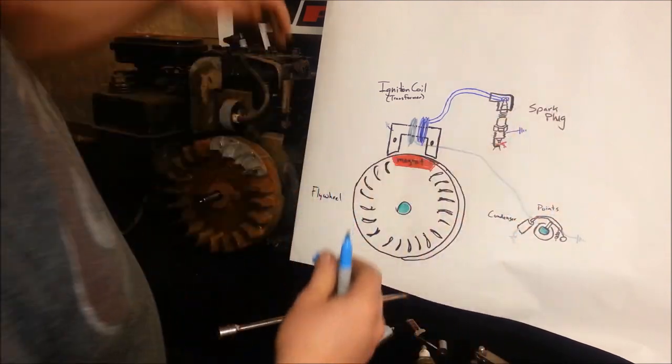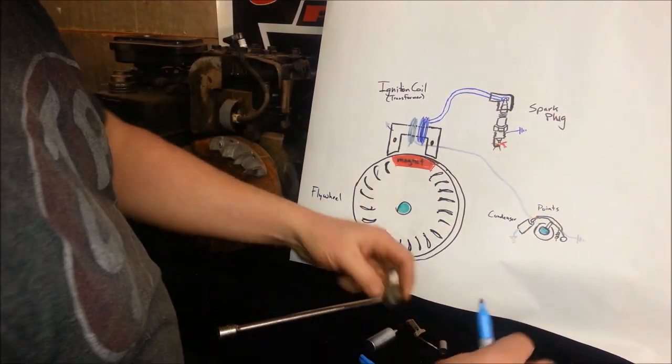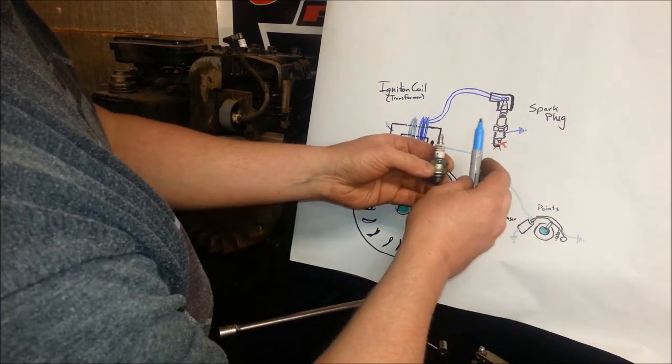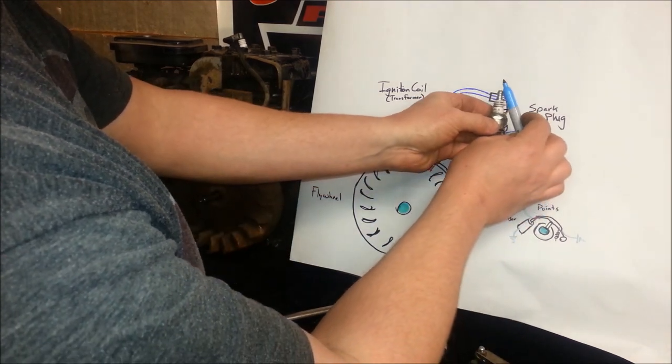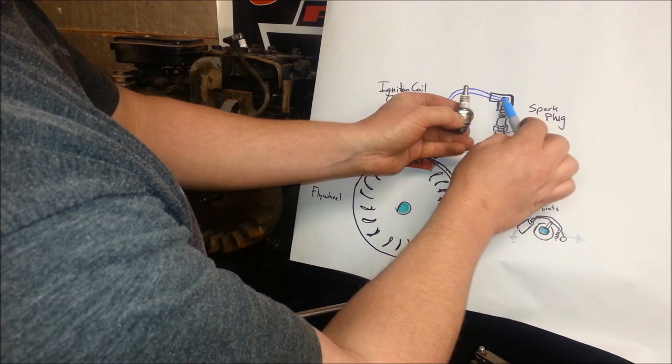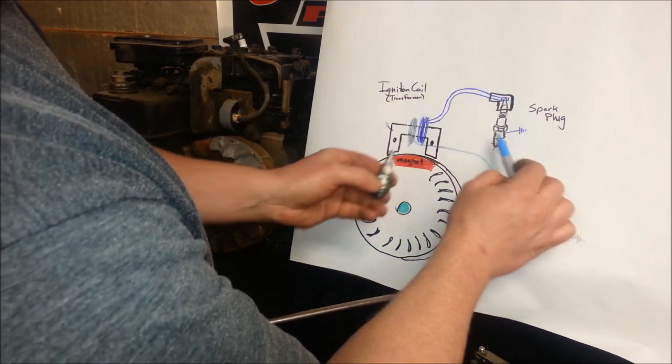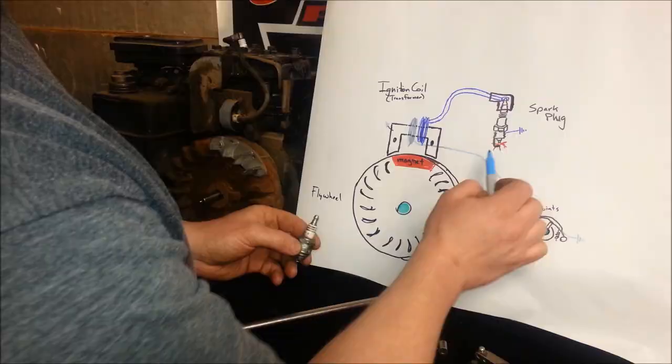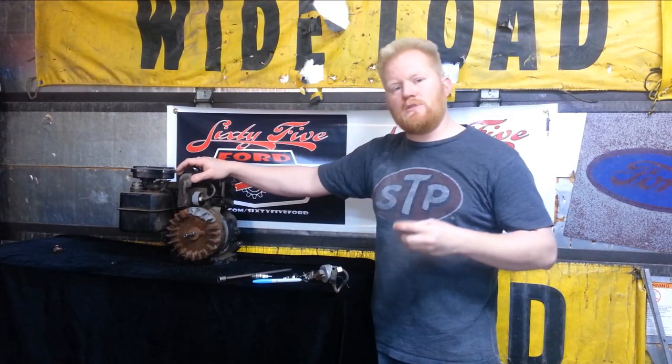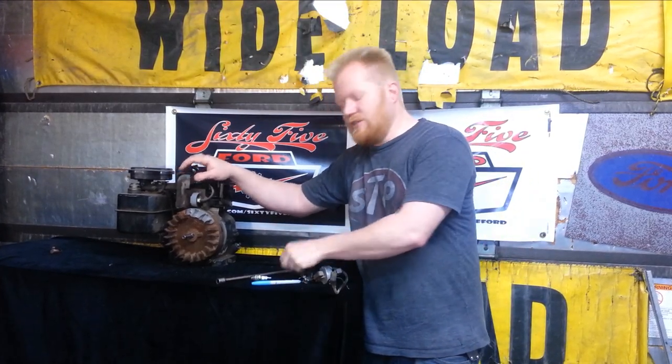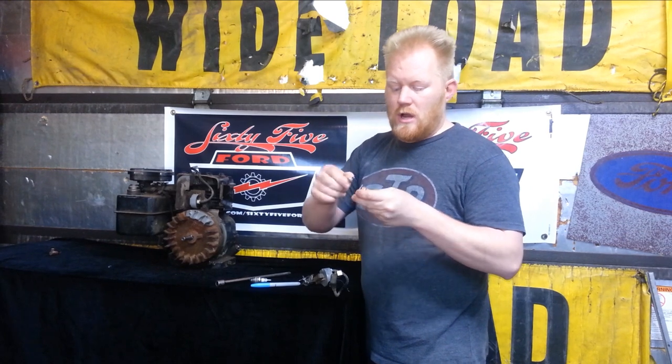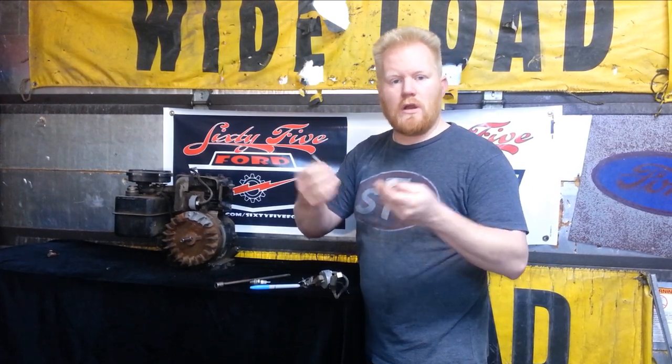and touches the top of the spark plug, essentially just shorting out the circuit straight to ground and never allowing the spark to jump. So the number one reason that most of these points actually fail is probably just dirty contacts. So just the contacts in between them just get dirty and fail.